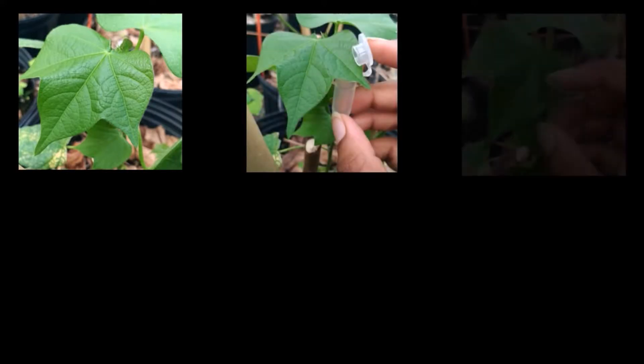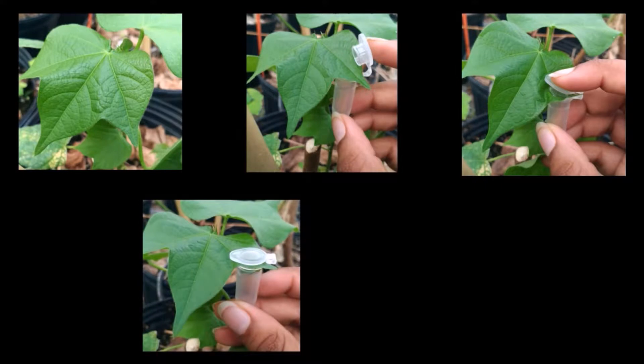The sample is collected from a young leaf and the tube is opened and the leaf is placed between the lid and the tube. It is then closed and detached from the plant.